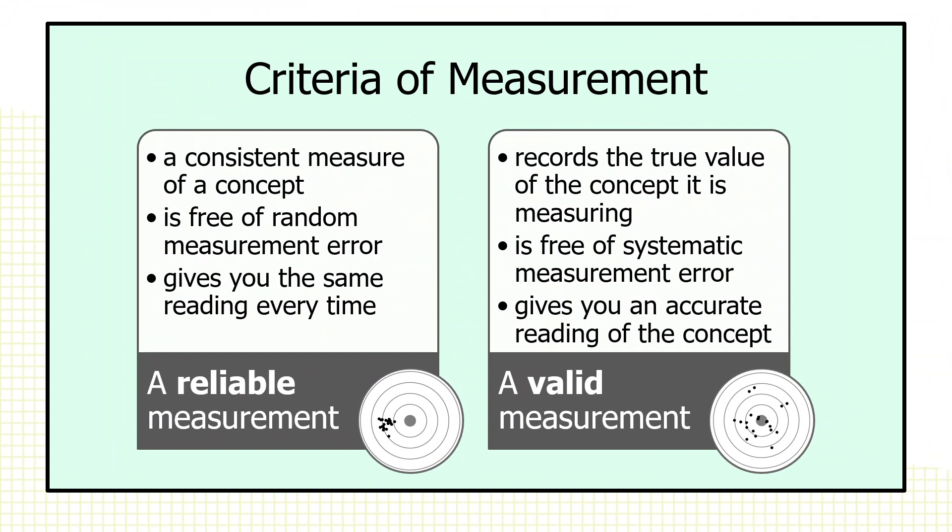Scholars argue whether you can have a measure that's valid but not reliable, and there's some argument about that. You can have a valid measurement that lacks some reliability. Think of the archer shooting at the target, and the arrows are clustered around the bullseye — maybe around the center ring, with a few inside the ring. There's some inconsistency, some random error. But if we averaged all these up, you'd come up with a very accurate measure of the bullseye. So it's possible to have a valid measure that is not perfectly reliable.